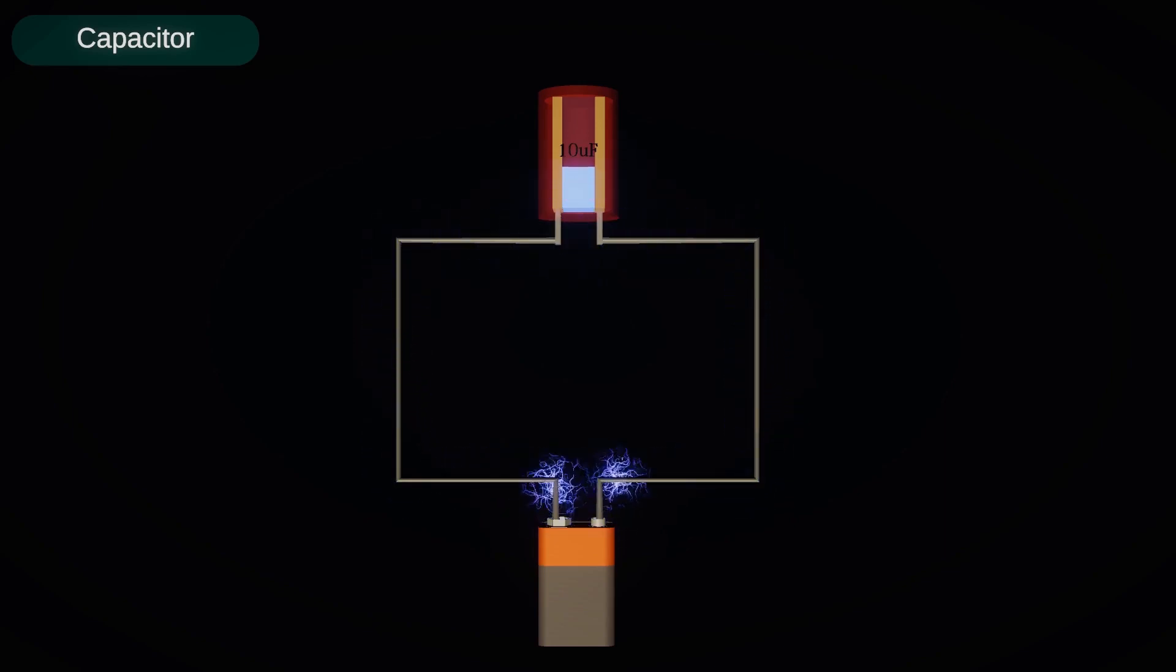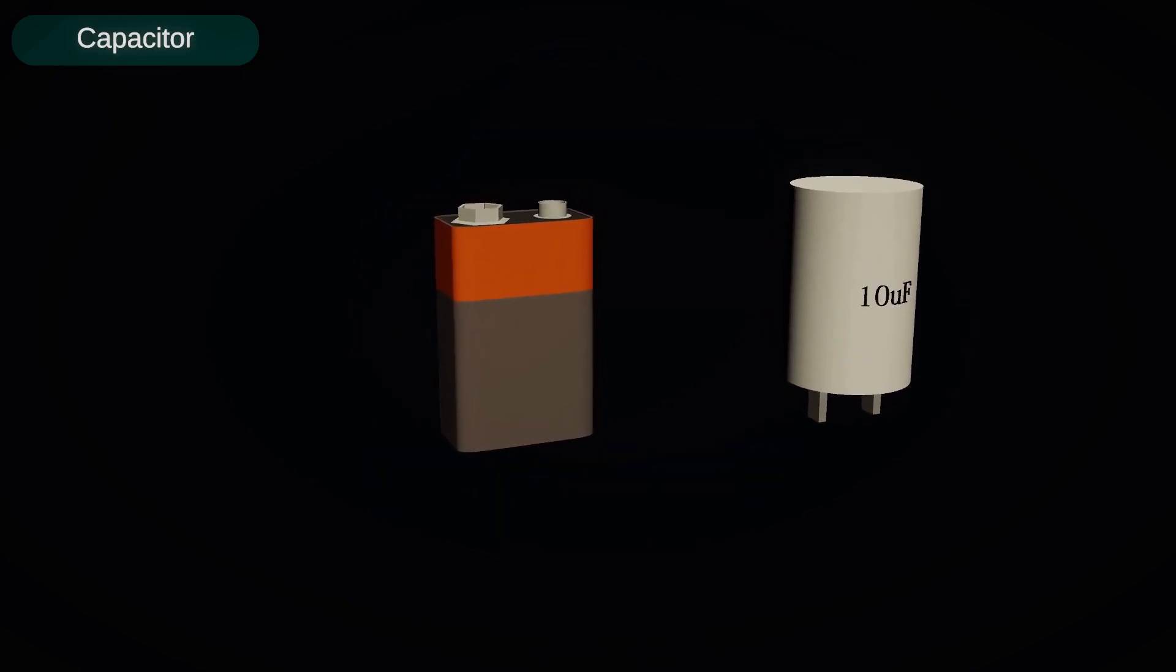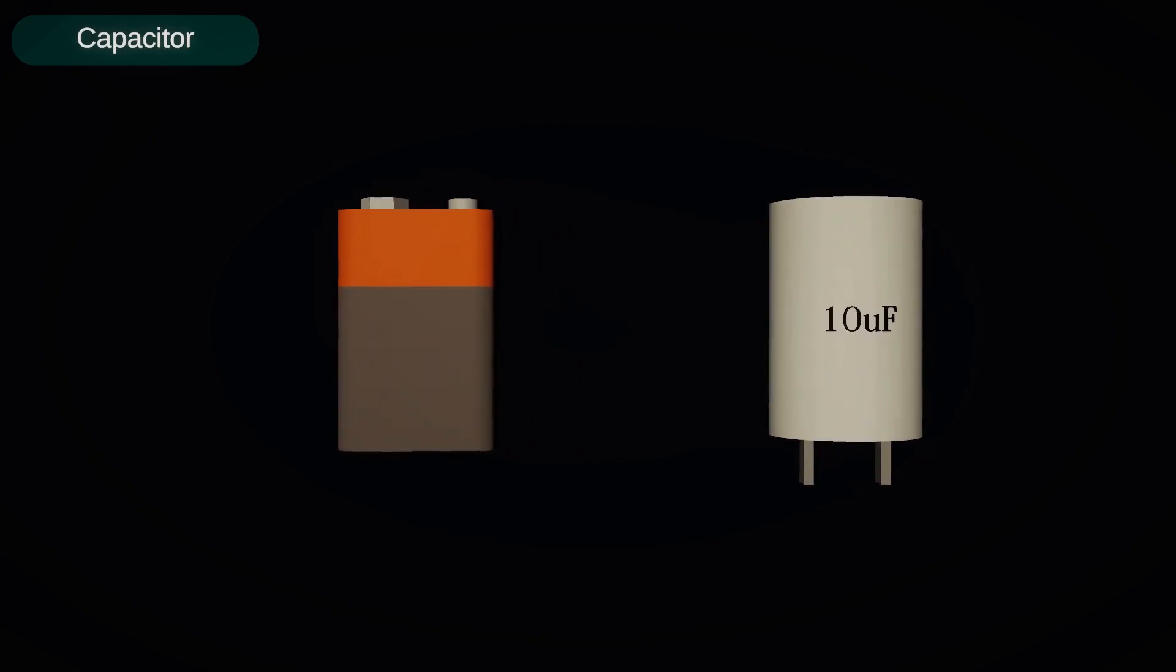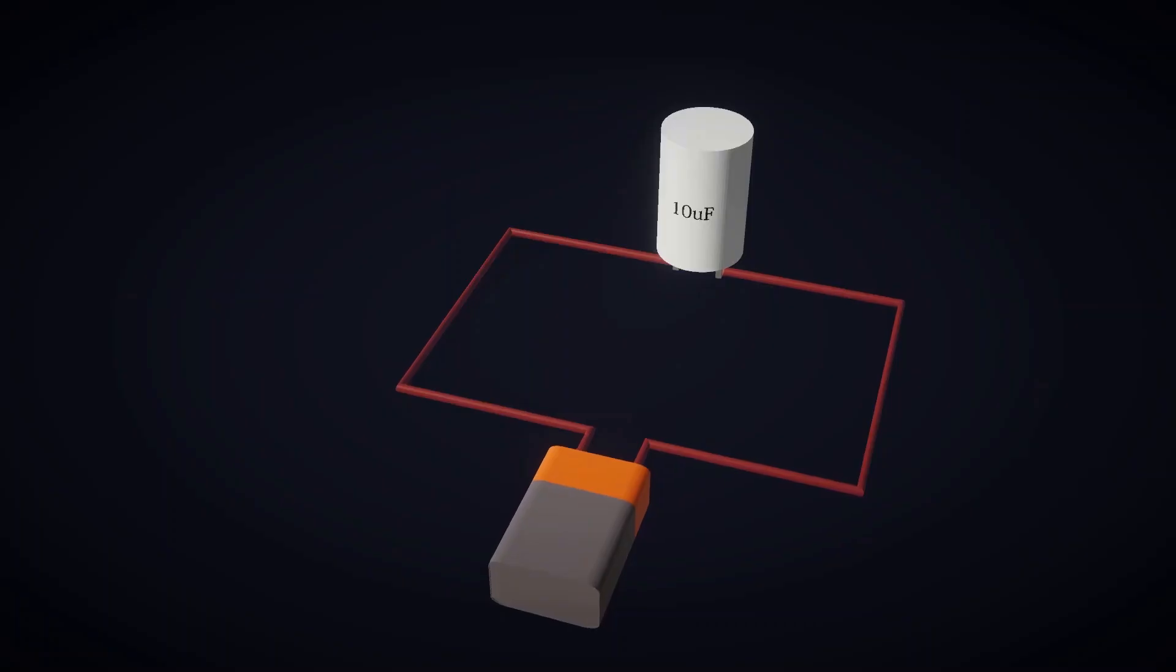The function of a capacitor is almost similar to that of a battery, but energy is stored in a capacitor in a different way. In comparison to a battery, a capacitor stores much less energy. However, the speed of storing and releasing energy in a capacitor is much faster compared to a battery.